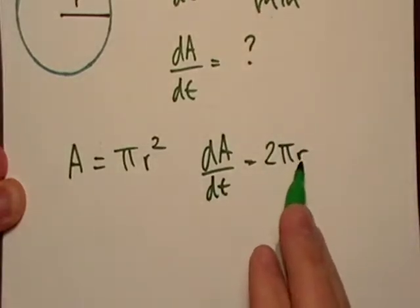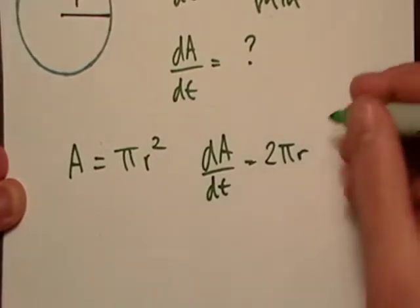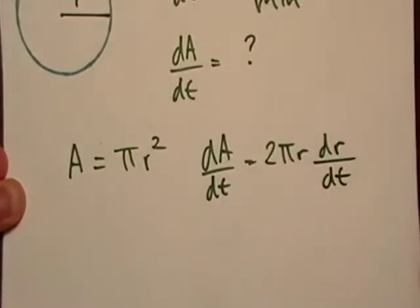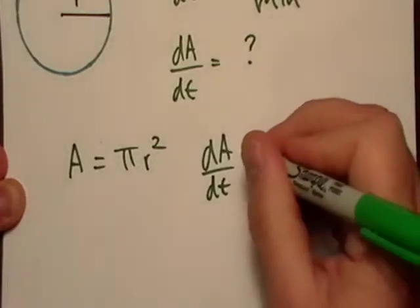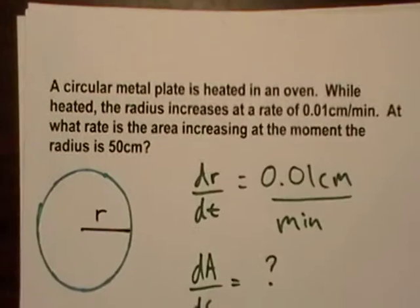But our variable here was r. We're looking at a variable over time. So we're going to throw in dr/dt right there. Now let's go back to the problem.